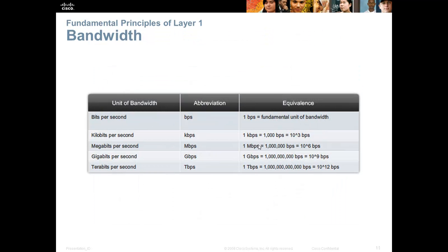Most physical media is characterized by how fast and how far it can go. Speed is measured in terms of bandwidth, which is measured in bits per second. A small 'b' is bits per second; a capital 'B' is bytes per second. Eight bits equals one byte, and one byte is roughly one character — so a text document with five characters typed is roughly five bytes. Bandwidth units include kilobits (one thousand), megabits (one million), gigabits (one billion), and terabits (one trillion).